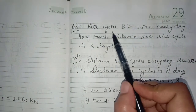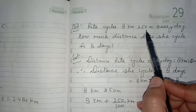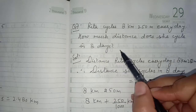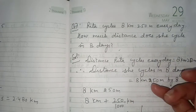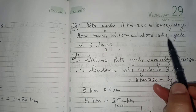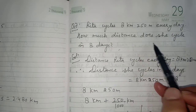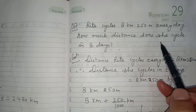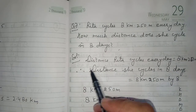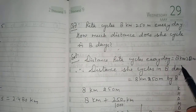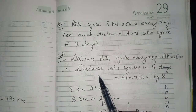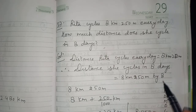Question number 7: Rita cycles 8 kilometer 250 meter every day. How much distance does she cycle in 8 days? Every day she covers 8 km 250 m. We need to find the distance she covers in 8 days. Distance Rita cycles every day is 8 kilometer 250 meter.